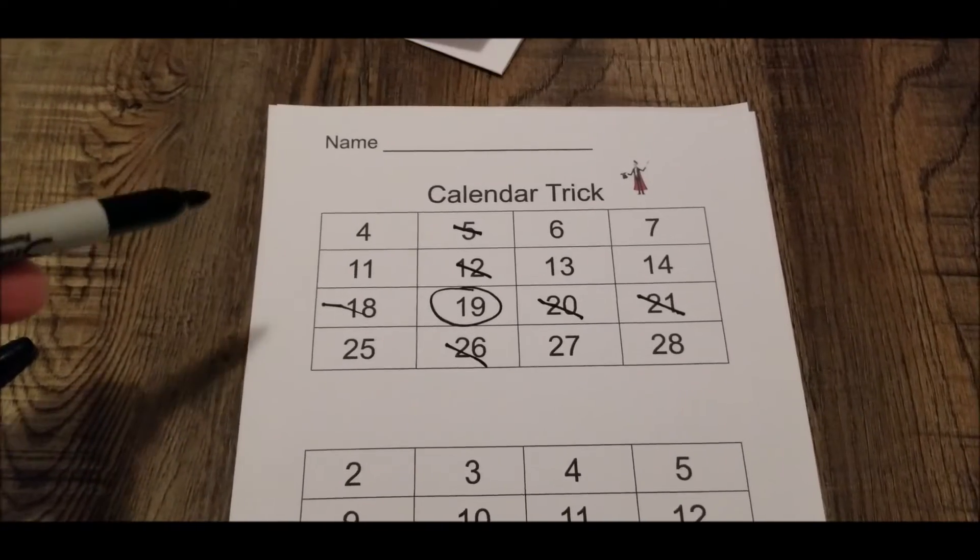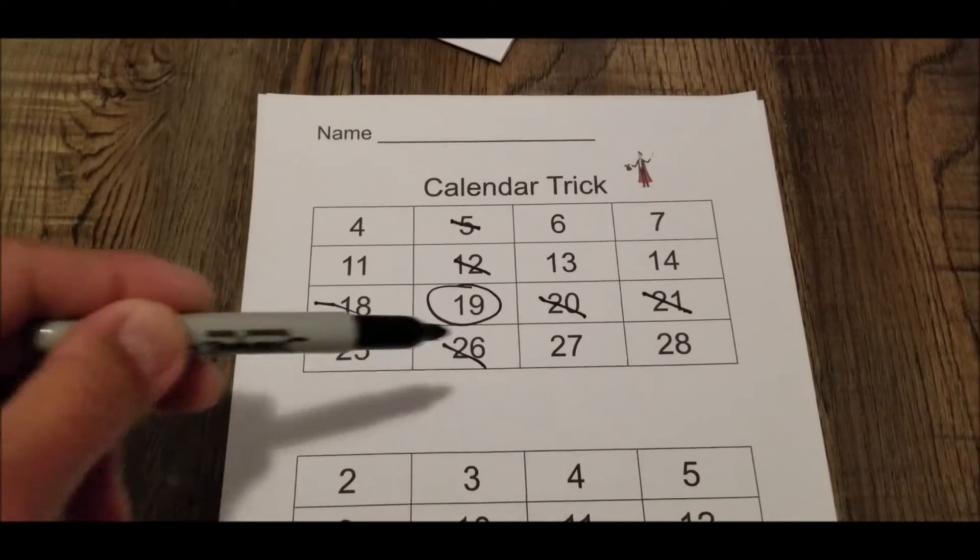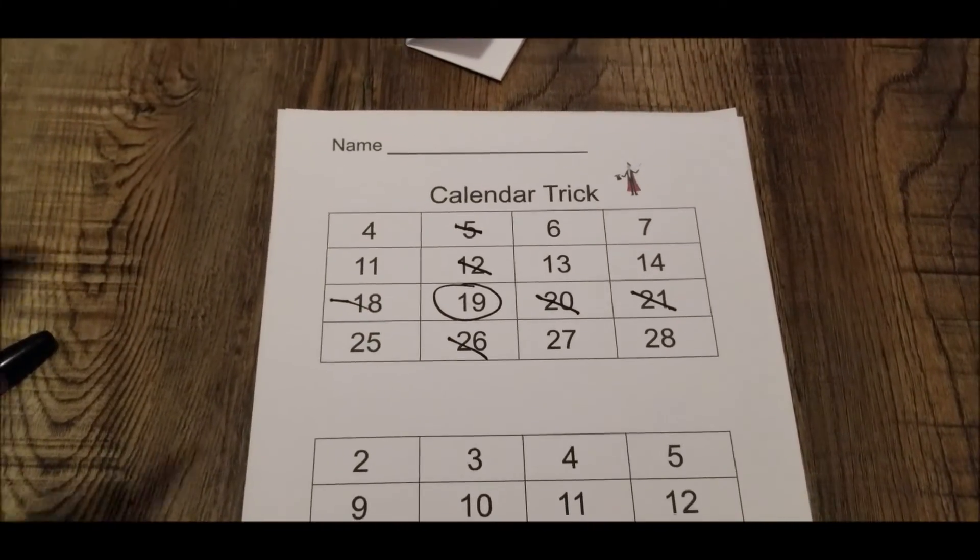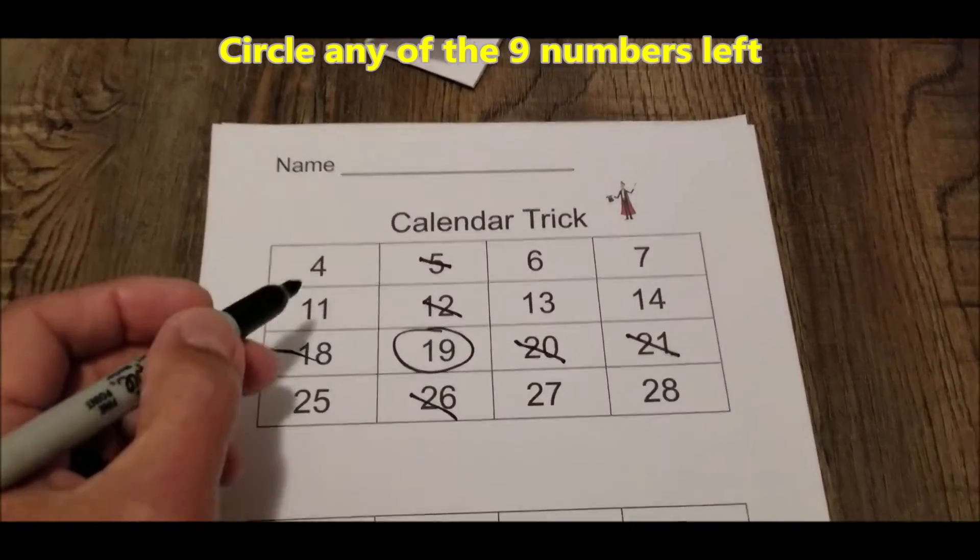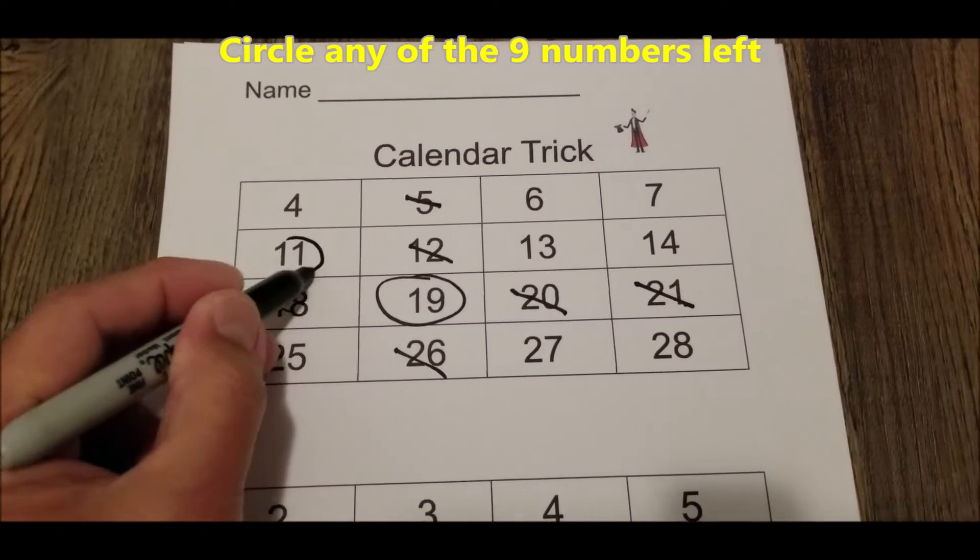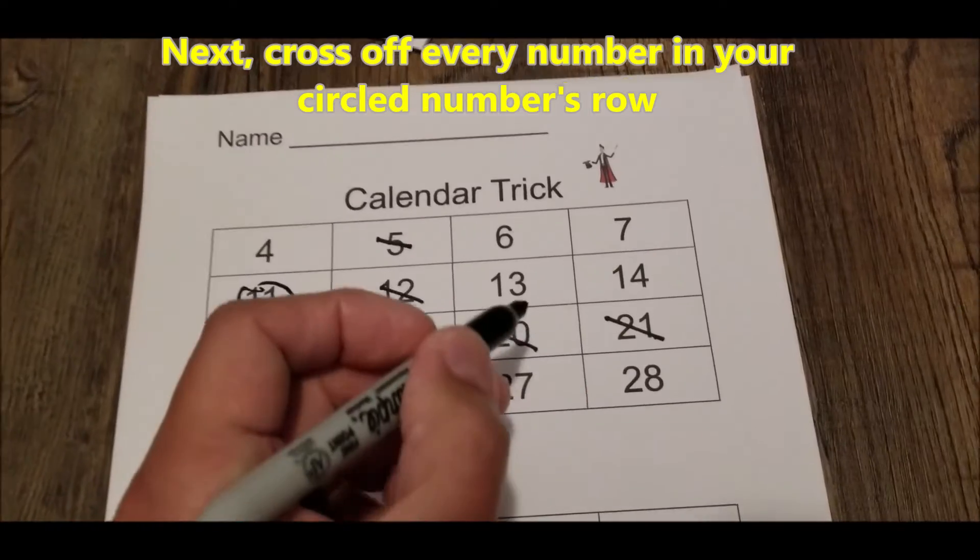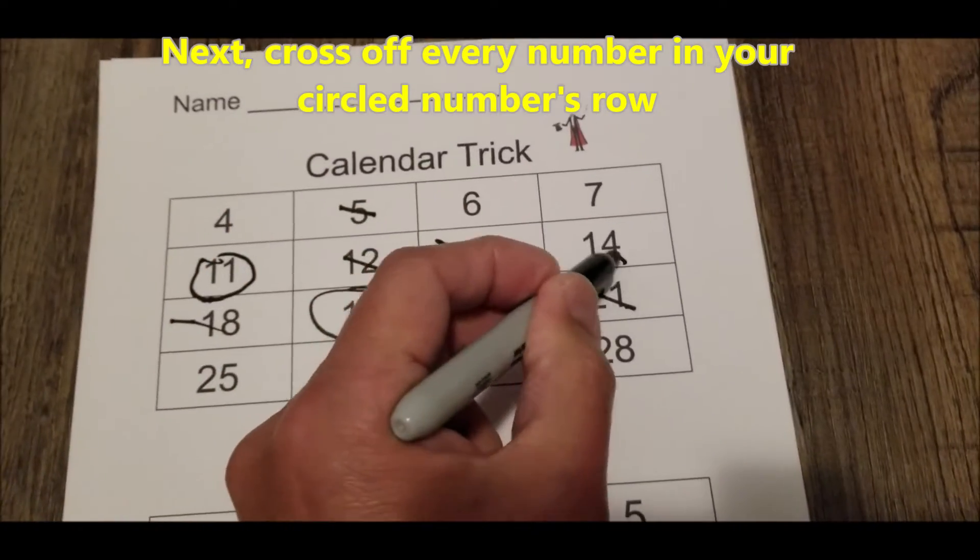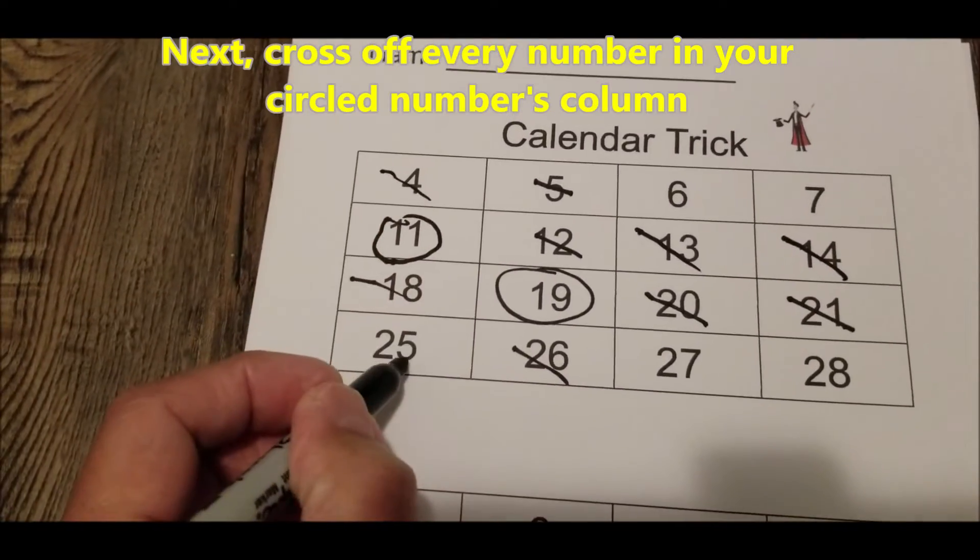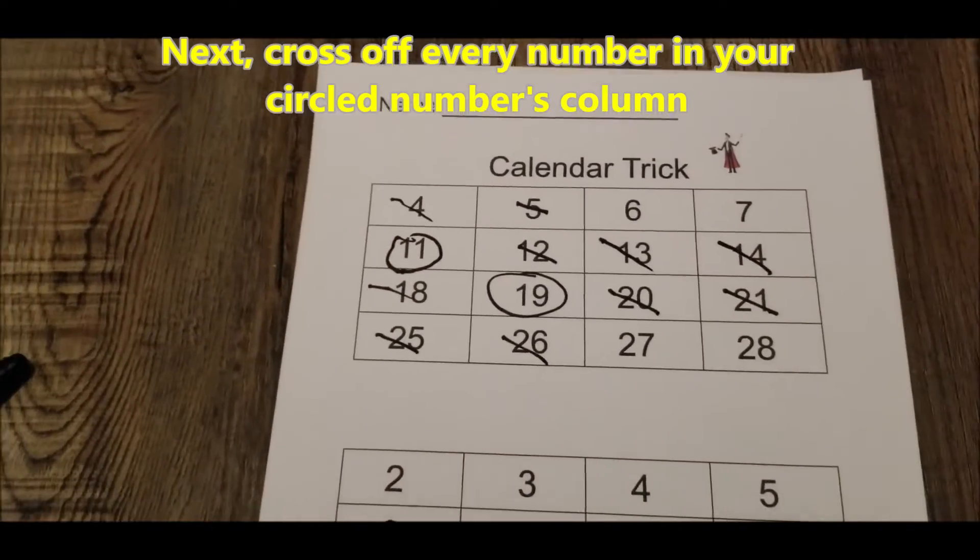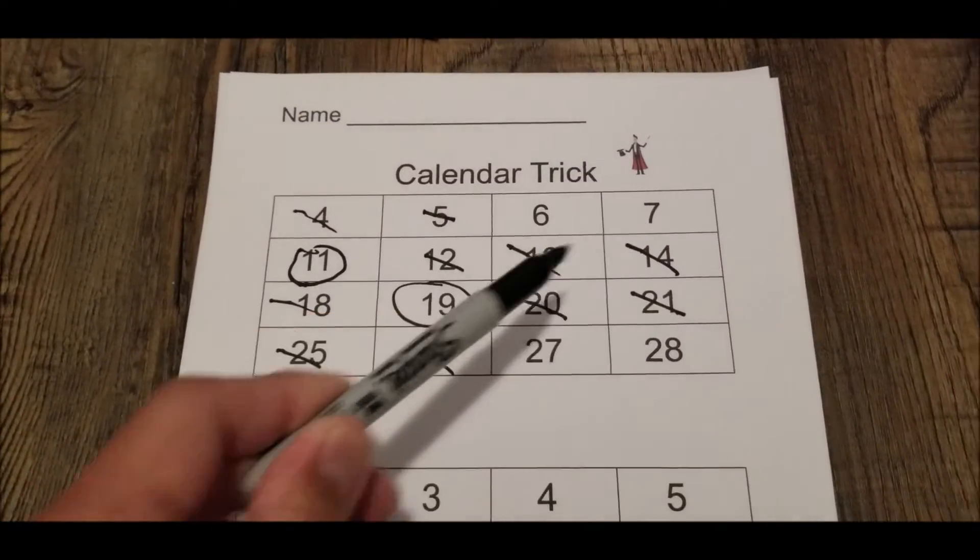So that should give us nine numbers left. One, two, three, four, five, six, seven, eight, nine. Now you're going to circle another number, one of the remaining nine. So let's say I circle this 11. Now I'm going to do the same thing. I'm going to cross off every number in its row and cross off every number in its column. And that should leave me with four numbers left. One, two, three, four.